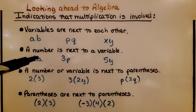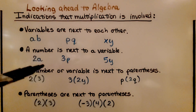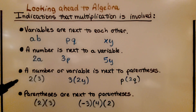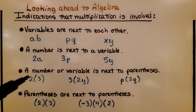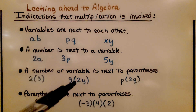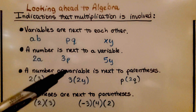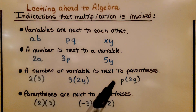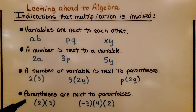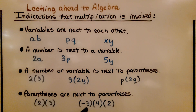If we have a number next to a variable, like 2a, it means two times whatever a's value is; three times whatever p is. Or we'll see a number or variable next to parentheses — this is two times three, or three times two y, where two y means two times y and we're multiplying that by three. Here we have p times two q. And if parentheses are next to parentheses, this is two times three, or negative three times four times two.